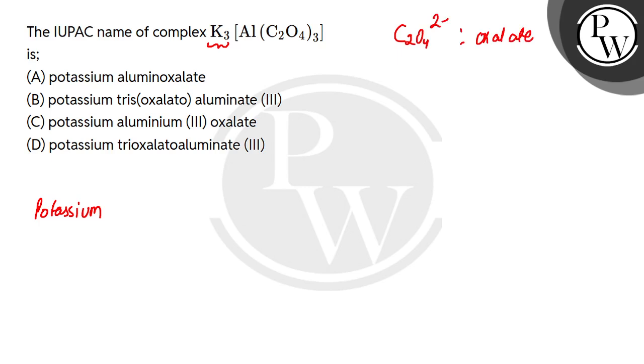So this is bidentate. How many? Three. So we write trioxalato. It's called oxalato.